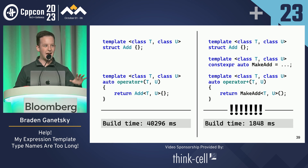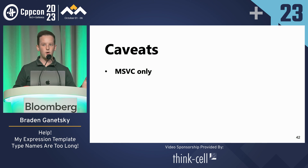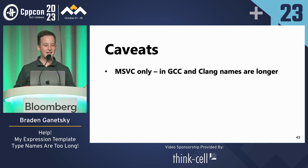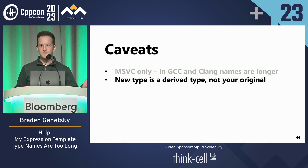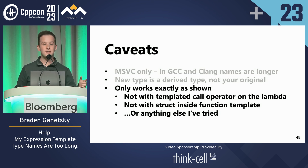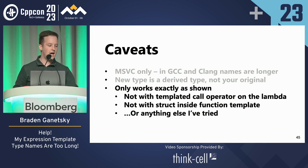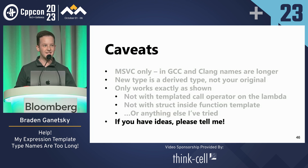Before I end, some caveats: this is MSVC only — I tried GCC and Clang, and the same trick actually made the names longer there. About an hour before this talk I was told about something that might work for those compilers, but hadn't prepared it. Also, the new type is a derived type from the one you wanted, so be careful. This trick only works exactly as shown: you can't have a templated call operator on the lambda, and you can't have a struct inside a function template — it has to be a lambda template. If you have any ideas, I'd love to talk about it. Thank you all very much for listening.